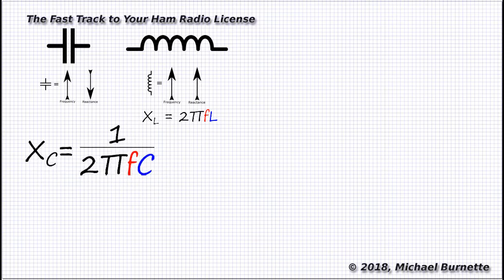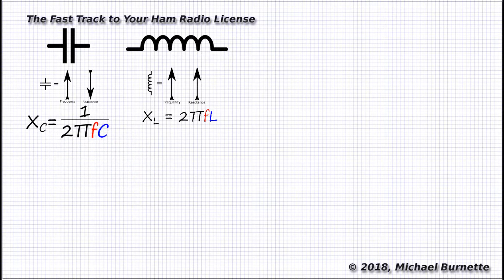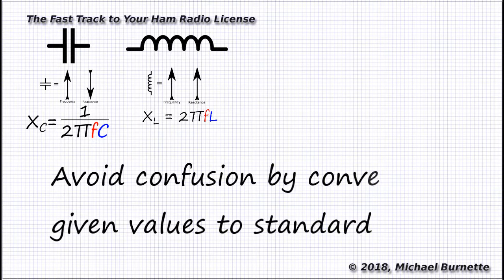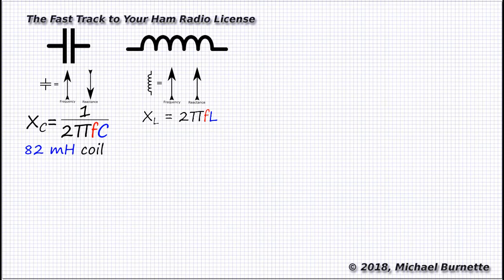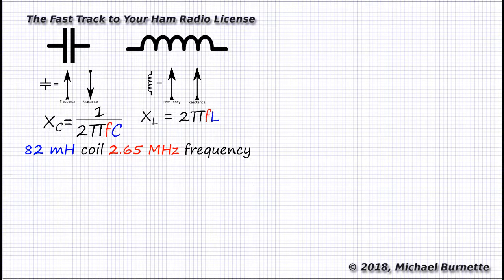Now what's useful in these, and really any other formula, is to get all the elements into standard units, such as farads, hertz, henrys, and ohms. So let's do one. Let's calculate the reactance of an 82 millihenry coil at 2.65 megahertz. The formula for inductive reactance is XL equals 2πfL. So we'll plug in our values.